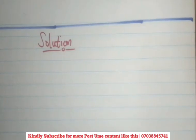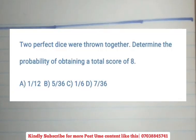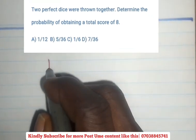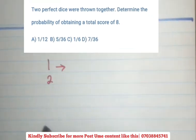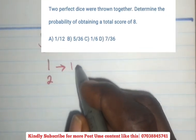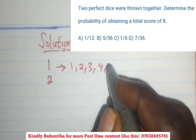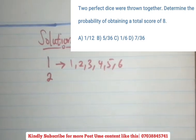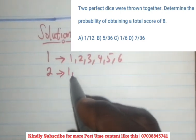We'll take the first question real quick. We are told that two perfect dice were thrown together to determine the probability of obtaining a total score of 8. So you have two dice, first die and second die. The first die can give you numbers from 1, 2, 3, 4, 5, 6. Second die can also give you the same numbers.